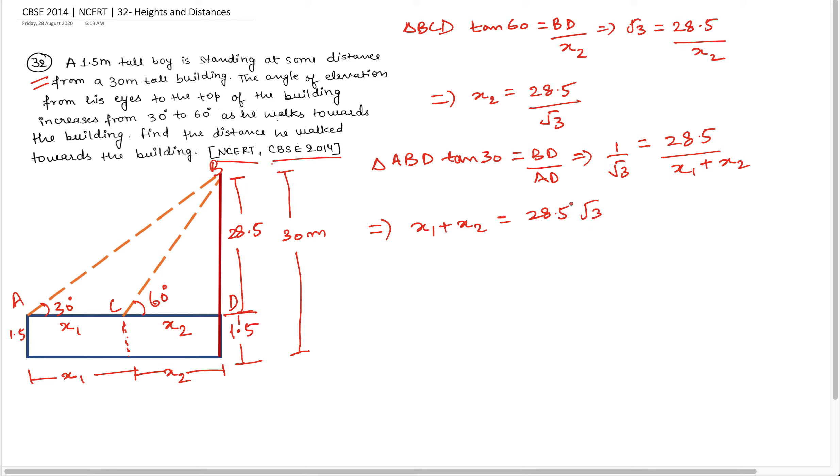मैंने बस cross multiply किया है. अब मैं x2 की value, इसे मैं equation 1 बोलता हूँ. इस value को यहां replace कर देता हूँ. तो यह क्या हो जाएगा? x1 remains x1 plus 28.5 divided by root 3 is equal to 28.5 into root 3. यह आ गया.